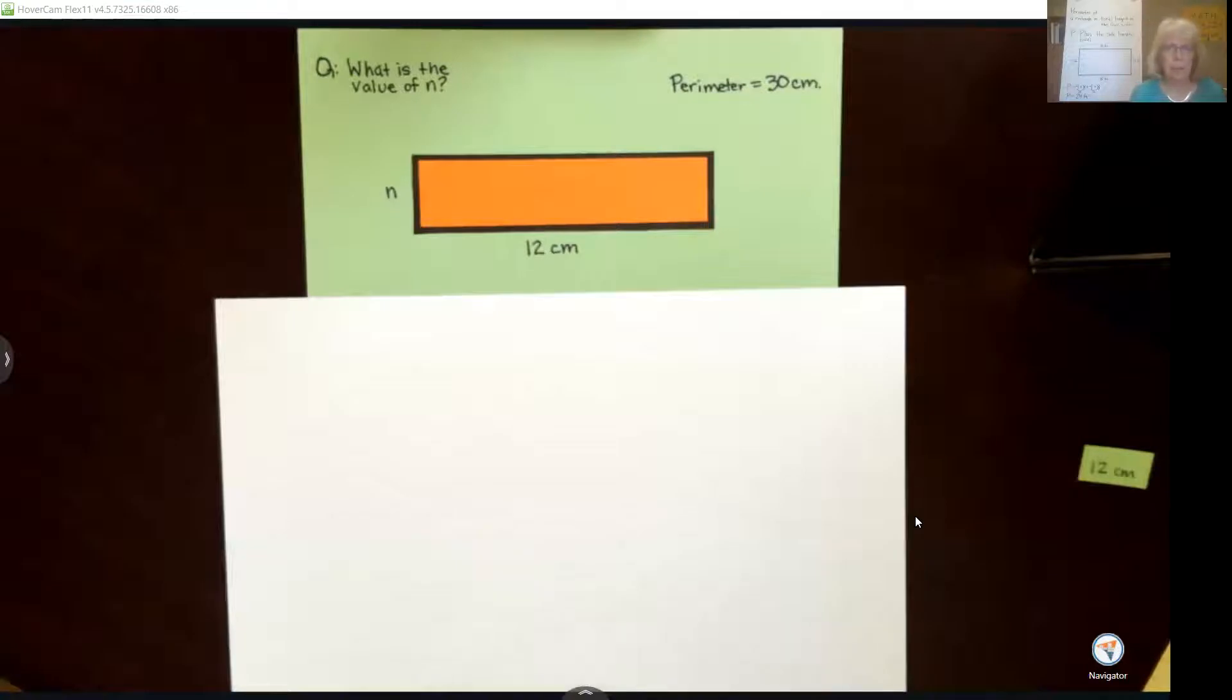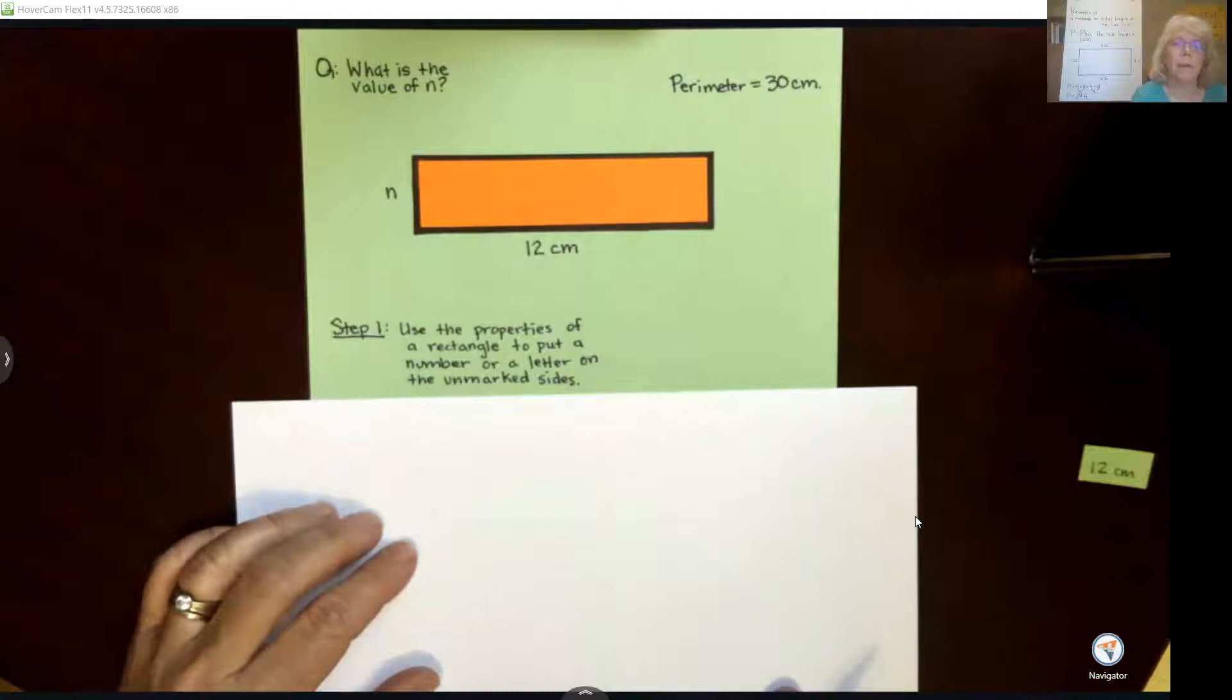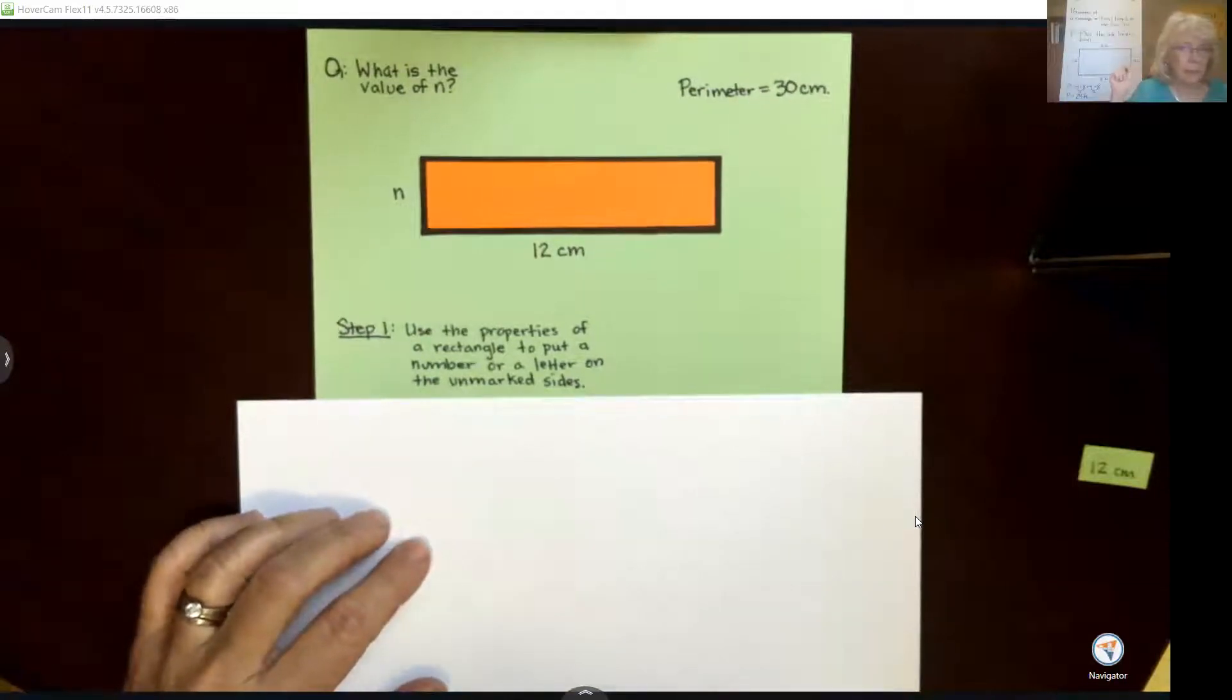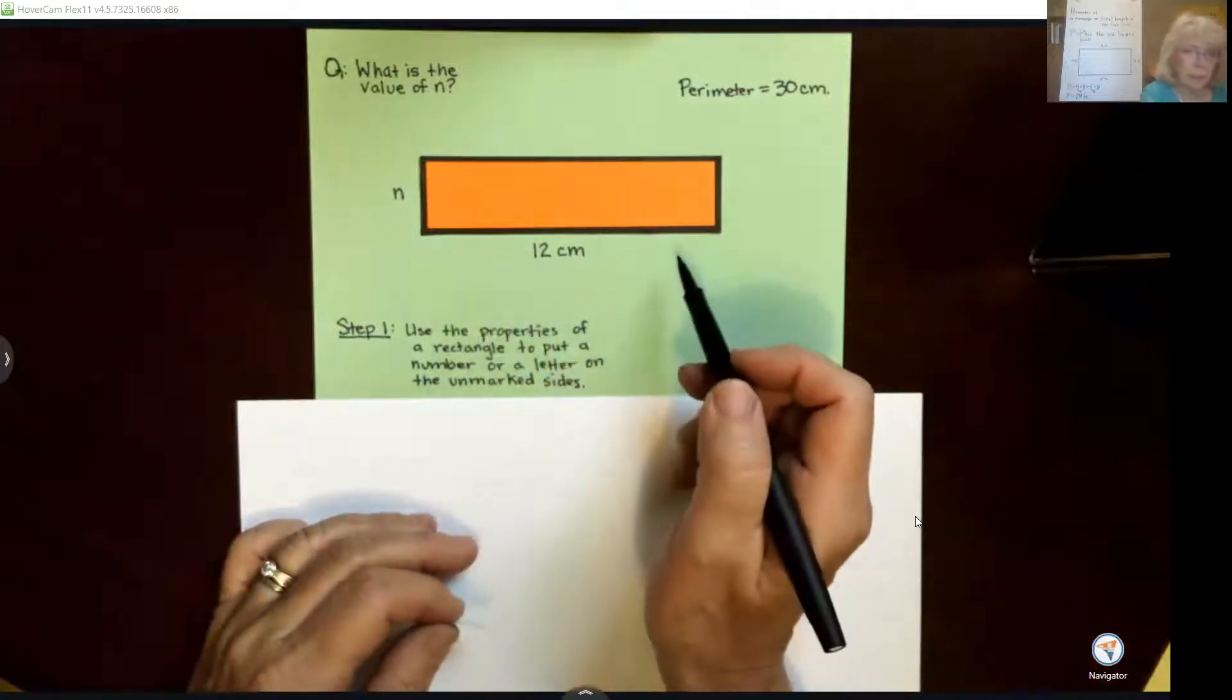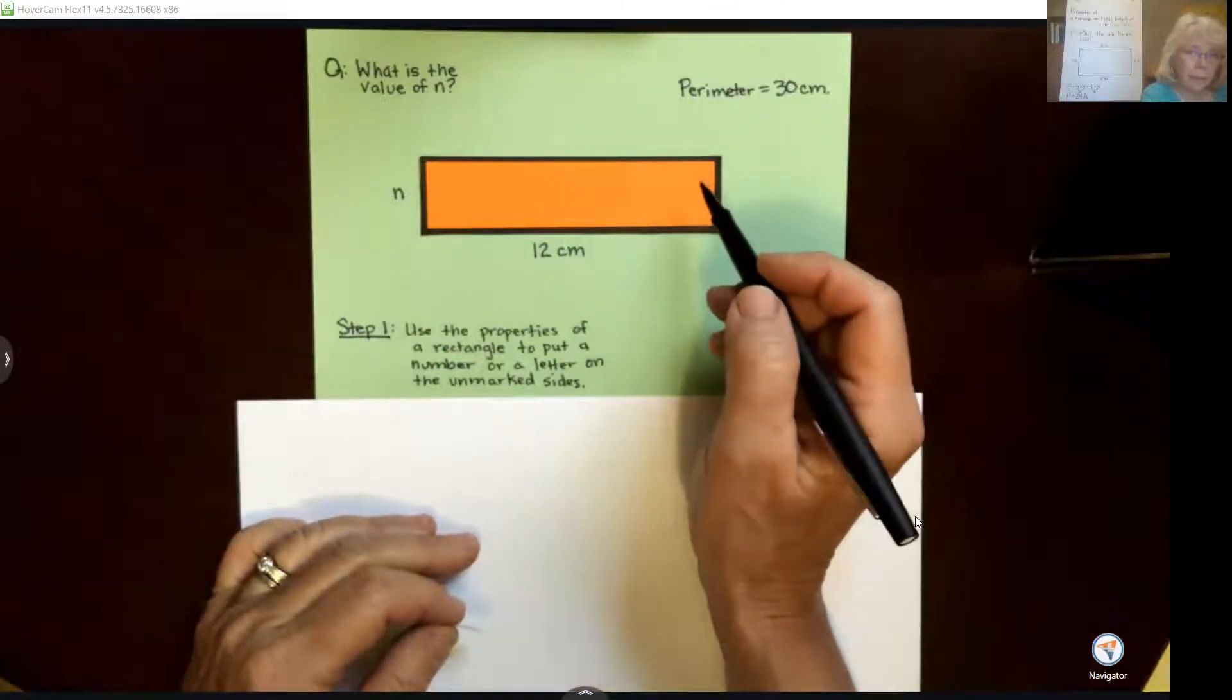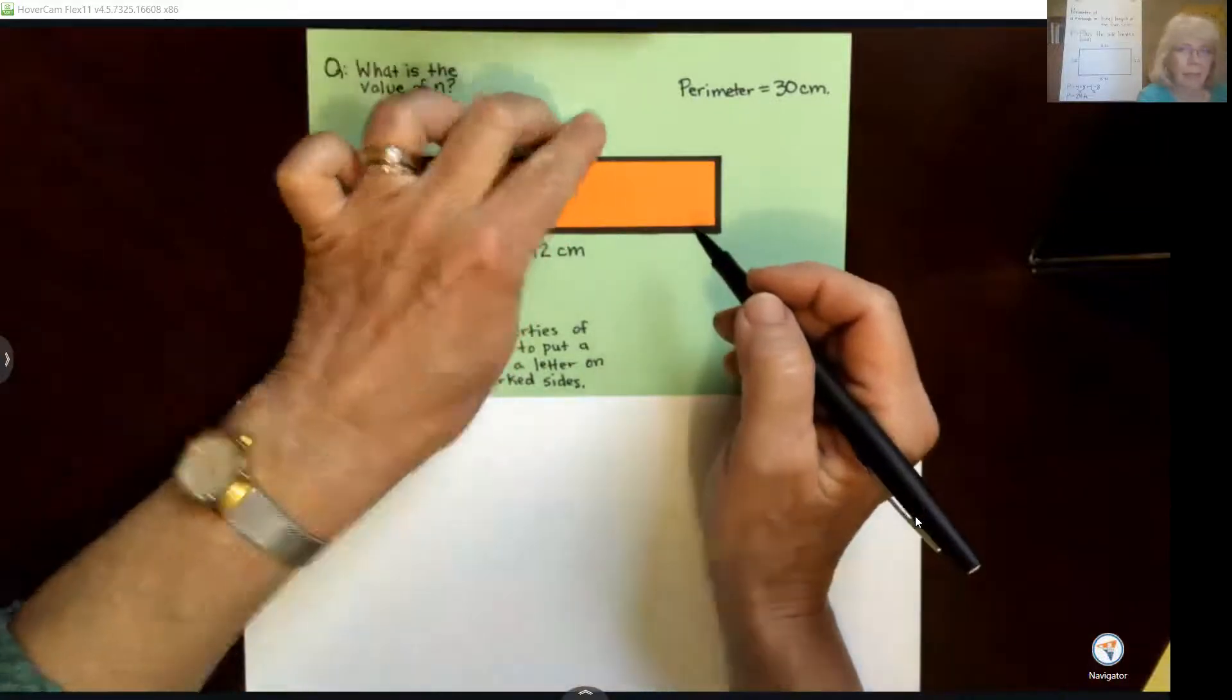It doesn't seem like enough information, but it turns out it is. So our first step is to use the properties of a rectangle to put a number or a letter on the unmarked sides. So if you think back to that rectangle that we saw in the chart paper and think about rectangles, you'll remember that if this side is 12 centimeters long, how long does this opposite and parallel side have to be? Say it out loud. That's right, 12 centimeters.